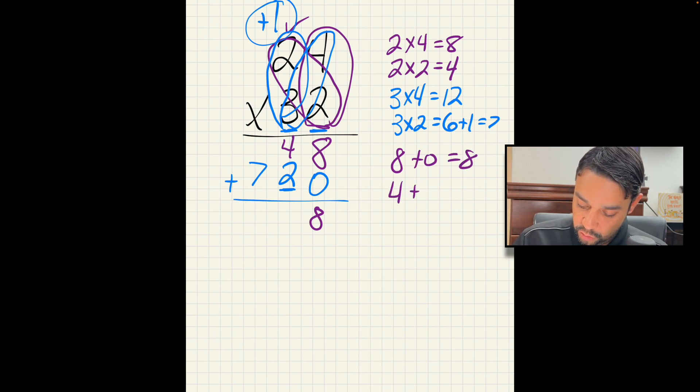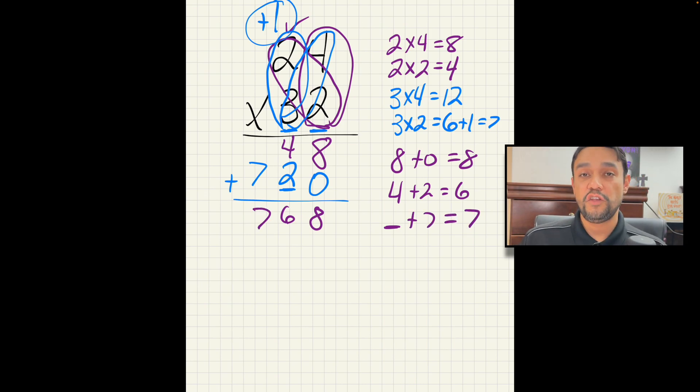8 plus 0 is 8. 4 plus 2, 6. Nothing plus 7, 7. So you're at your 768. Easy peasy, lemon squeezy. Now you can always watch this anytime you're confused. Just come right to here. And I'm going to do another one.